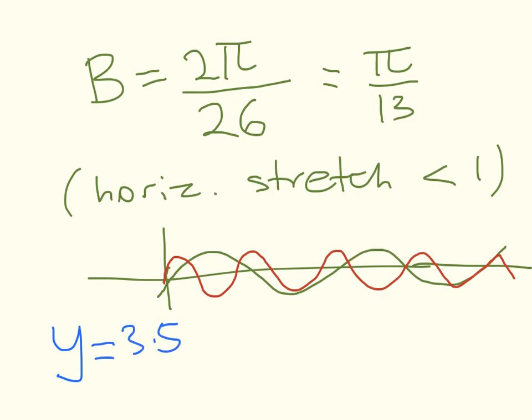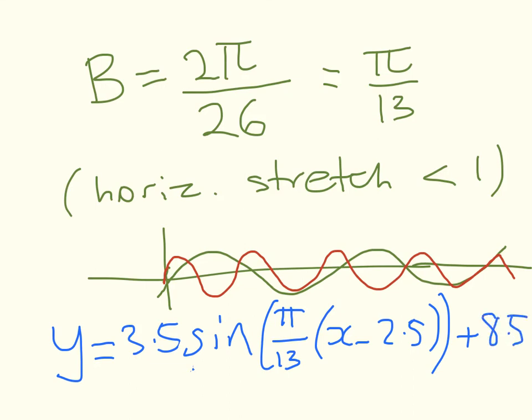Now we can finish off that equation at last. y equals 3.5 sin(π/13)(x minus 2.5) plus 8.5. What I've done there is I've turned everything into thousands, so that's where x equals sales in thousands.